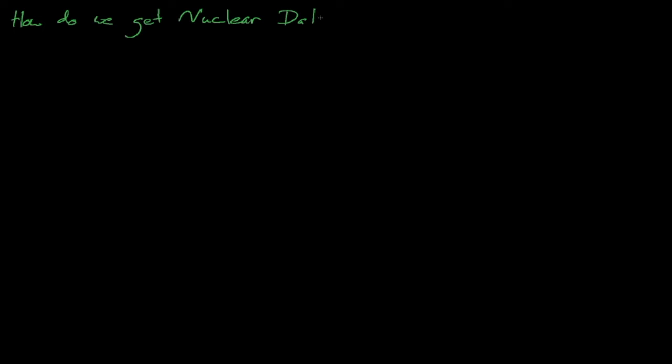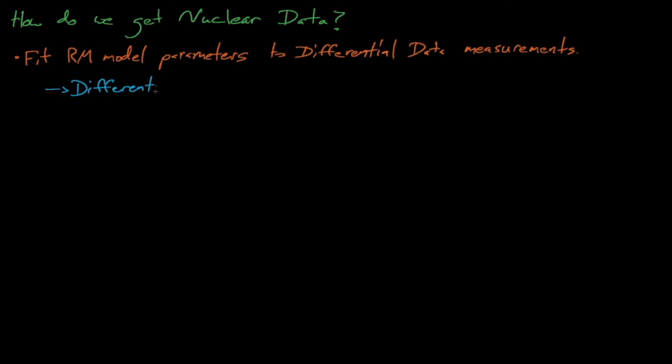So how do we get the nuclear data, and how do nuclear data scientists put it into these formalisms? Generating nuclear data generally involves fitting Reich-Moore model parameters, such as resonance energies and widths, to nuclear data measurements. Each one of these nuclear data fits is called a nuclear data evaluation. The measurements that we fit these parameters to are known as differential nuclear data. This data is differential because it is measured over very small changes in energy, with the goal of each energy point being measured as close to a delta energy as possible.